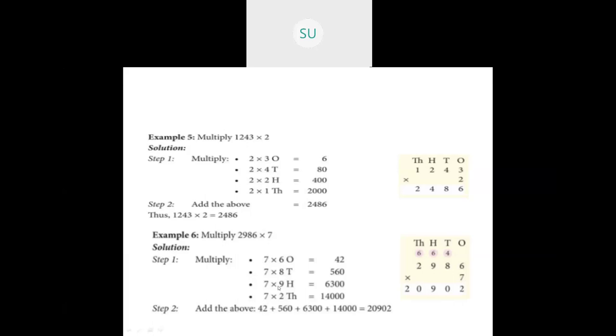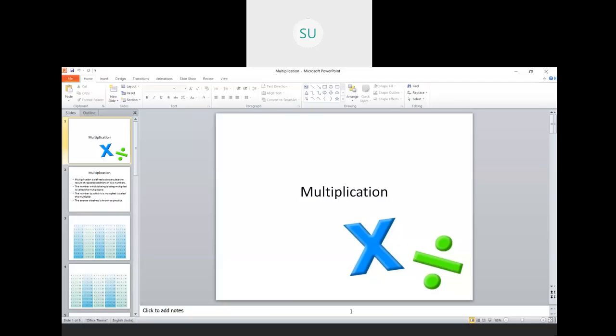Alternatively: 7 into 900 is 6300, and 7 into 2000 is 14000. Add all the parts and you get 20902.